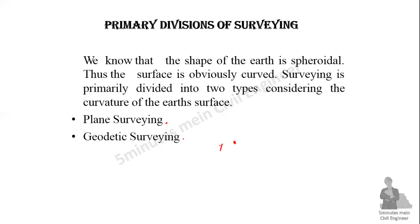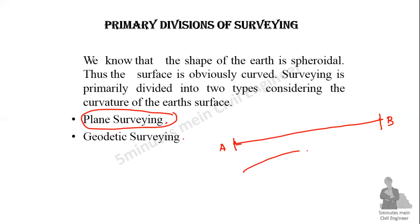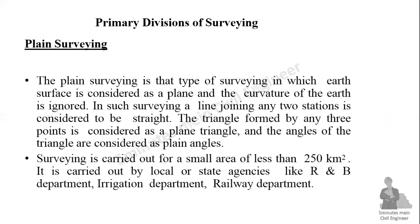Consider points A and B. You can see the distance between them and draw a straight line. Looking at points A and B, you can see the curvature of the earth beneath them. In plane surveying, the earth's surface is considered as a plane and the curvature of the surface is ignored.